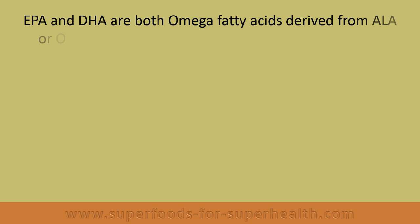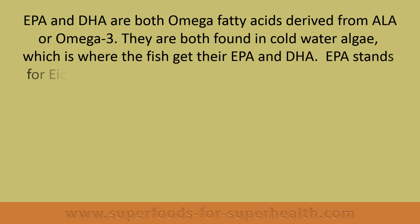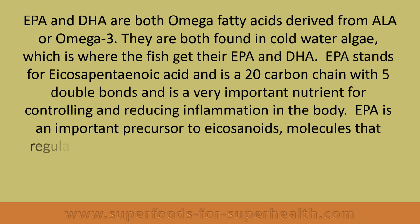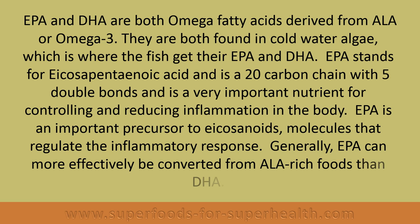EPA and DHA are both omega fatty acids derived from ALA, or omega-3. They are both found in cold water algae, which is where fish get their EPA and DHA. EPA stands for eicosapentaenoic acid and is a 20 carbon chain with 5 double bonds — a very important nutrient for controlling and reducing inflammation in the body. EPA is also an important precursor to eicosanoids, molecules that regulate the inflammatory response.